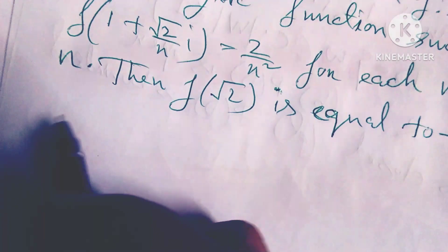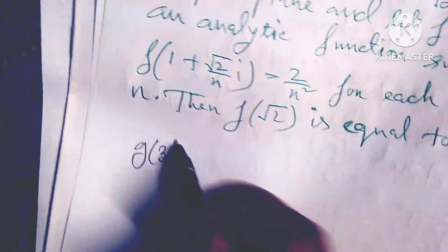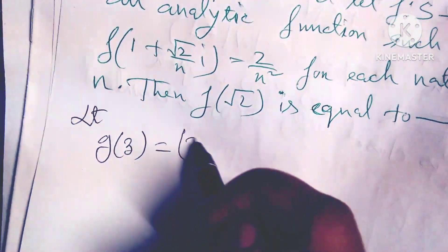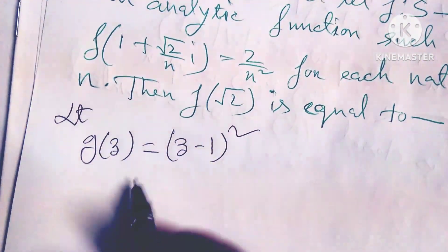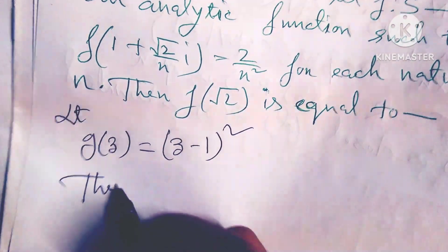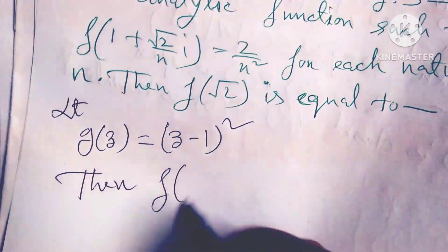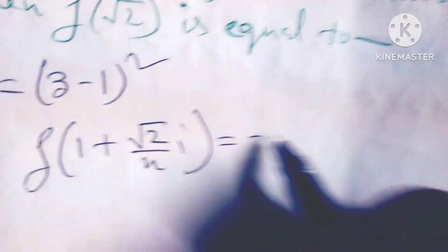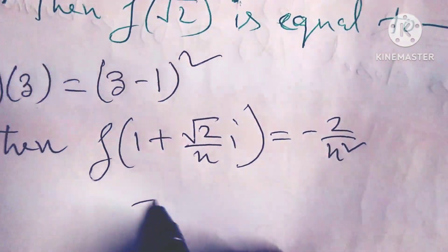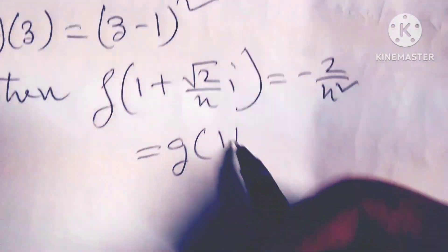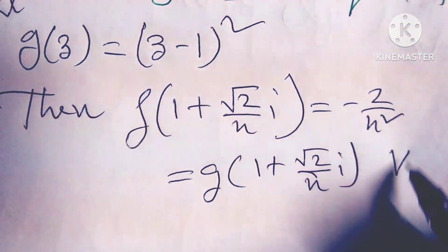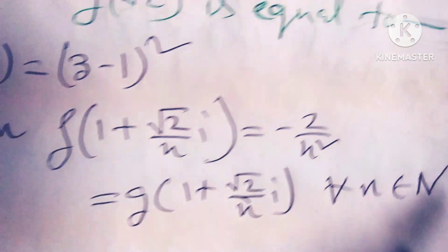So friends, I use identity theory. Let g(z) = (z - 1)². Then f(1 + √2/n i) = -2/n² = g(1 + √2/n i) for all n in N.